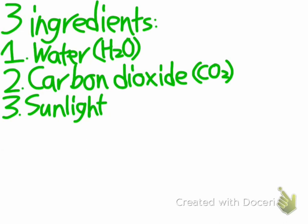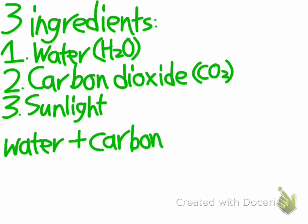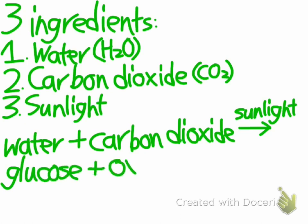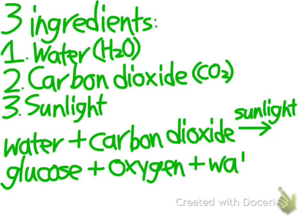I already showed you the photosynthesis equation, but let me write it in words for you. Water and carbon dioxide react with sunlight in a plant's leaves to make glucose and oxygen, as well as some leftover water.